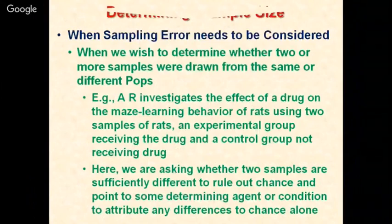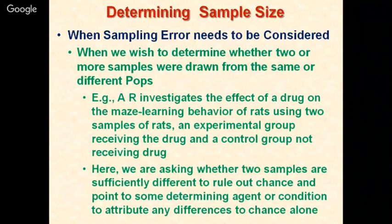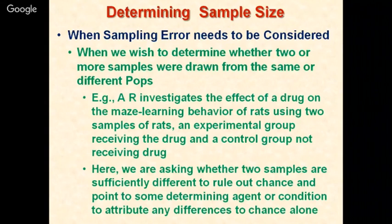Another instance when sampling error needs to be considered is when we wish to determine whether two or more samples were drawn from the same or different populations. For example, a researcher investigates the effect of a drug on the maze-learning behavior of rats using two samples — an experimental group receiving the drug and a control group not receiving it. Here we ask whether two samples are sufficiently different to rule out chance and point to some determining agent or condition.